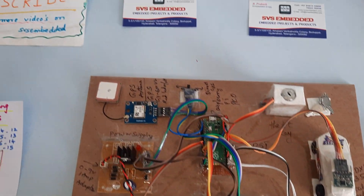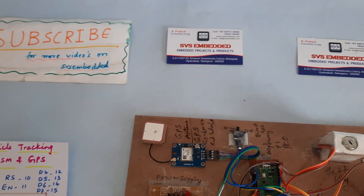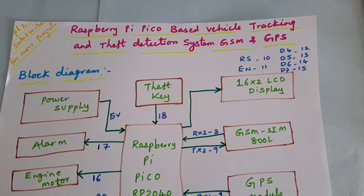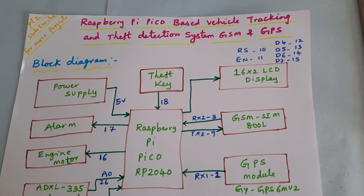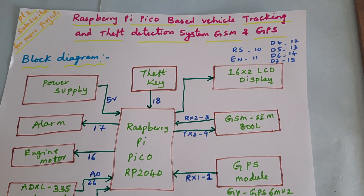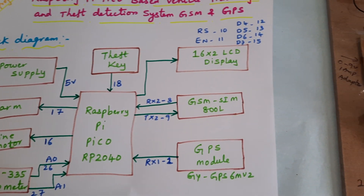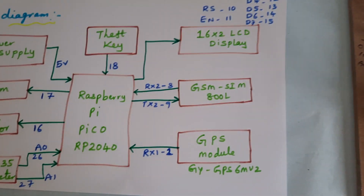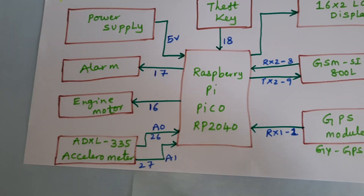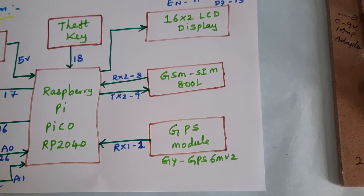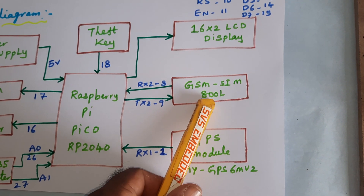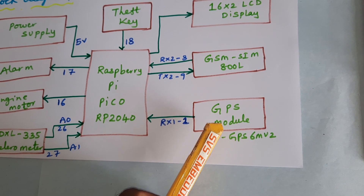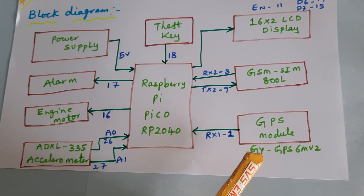Hi, we are from SVS Embedded. The project title is Raspberry Pi Pico-based vehicle tracking and theft detection system using GSM and GPS modules. We are using a Raspberry Pi Pico board with the RP2040 IC, along with two modules: GSM SIM800 for SMS communication and a GPS module to get latitude and longitude from the satellite.